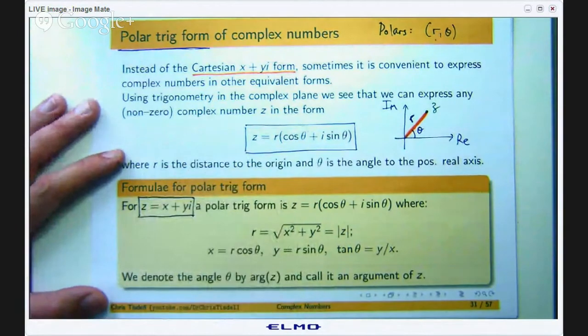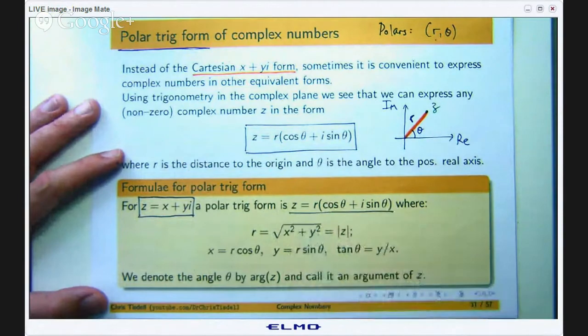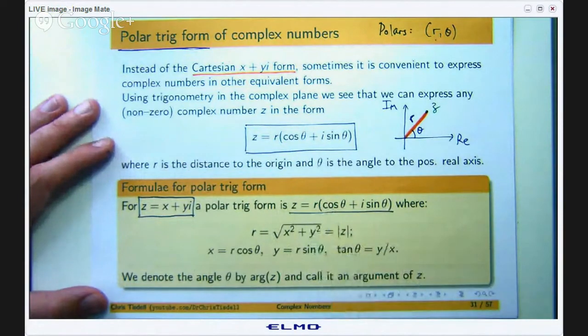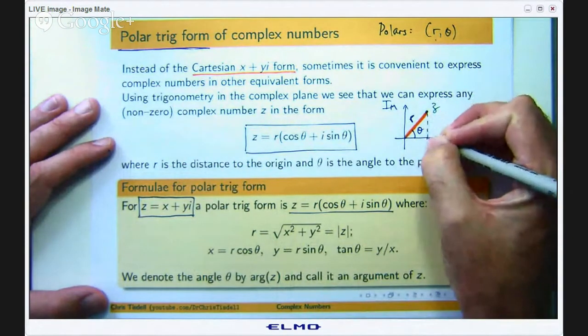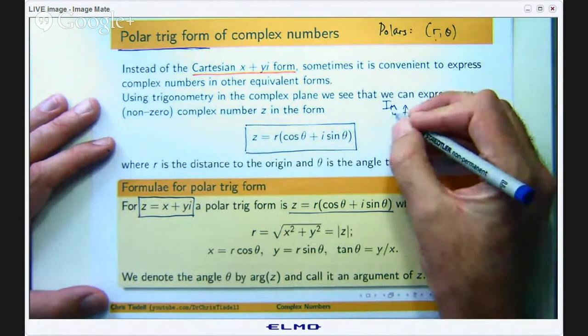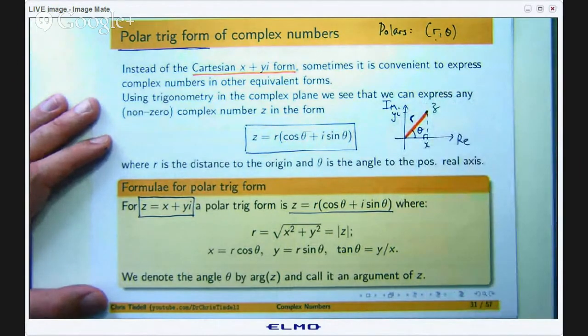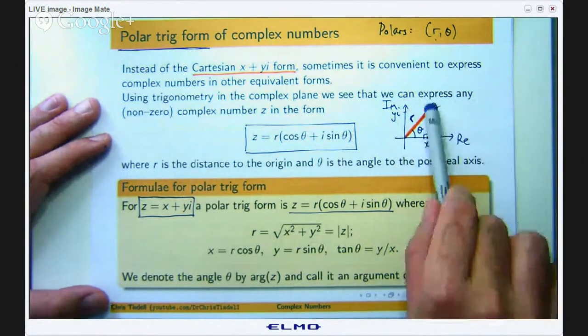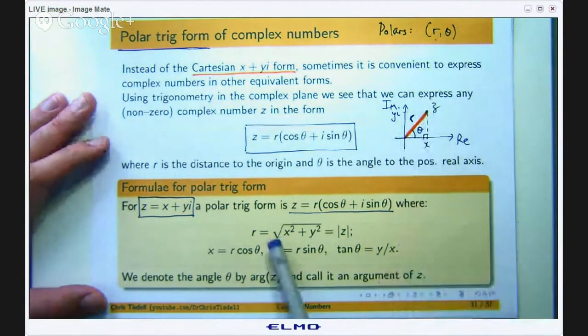Each complex number z has a polar trig form given by this where r can be computed using Pythagoras' theorem. If you sort of go down here, this will be x and this will be yi. You have got a right angle triangle. This distance here will be yi, this distance here will be x, and so r is just the square root of x squared plus y squared, also denoted by this modulus of z.